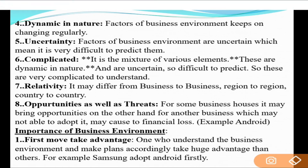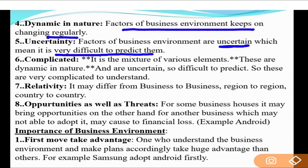Next feature: dynamic in nature. Dynamic means something that keeps on changing continuously — where there is no stability. The factors of business environment keep on changing regularly. Consumer taste, preference, habit, and demand keep changing all the time; they never remain the same. Next: uncertainty. Since the environment is dynamic, it is also uncertain — it is difficult to predict. We cannot say with certainty what will happen; we can only estimate.